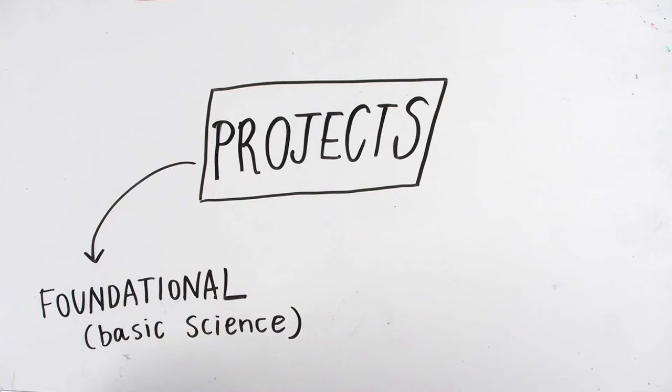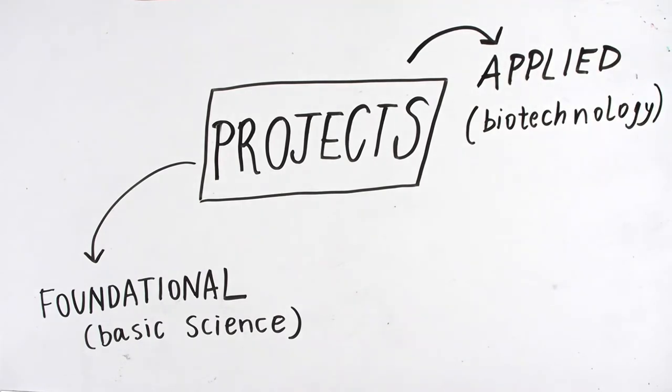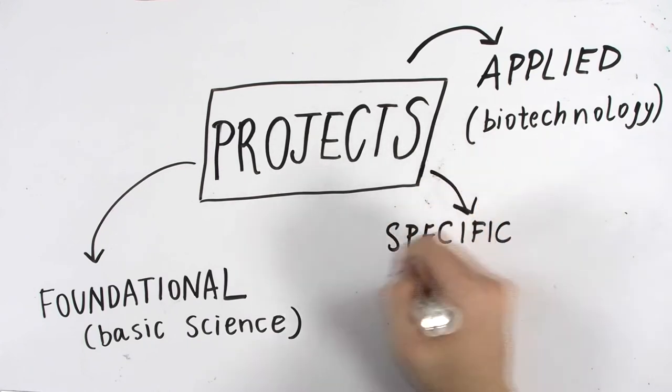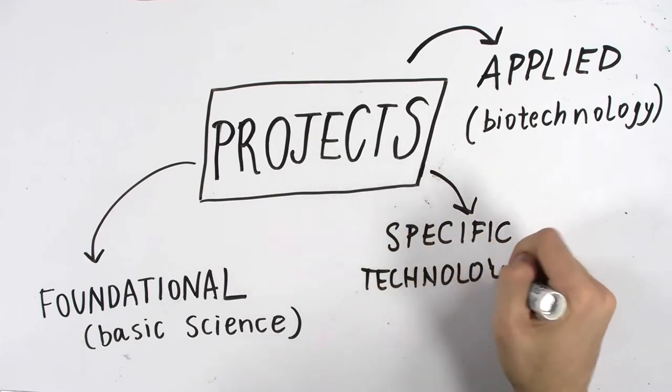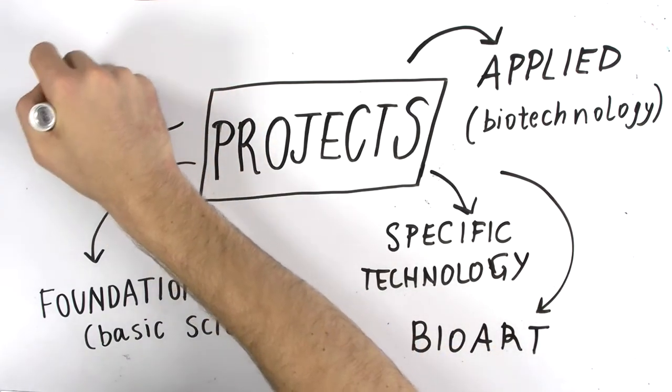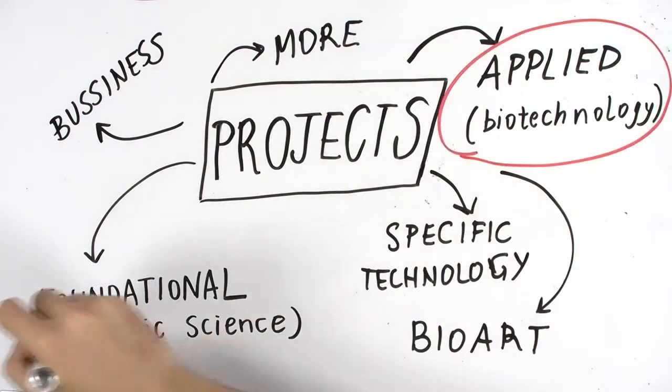Another type of project can be an applied one, where you use an engineered organism to perform a specific task like cleaning water from a pollutant, biosensoring, or producing a protein. Other projects can include the use of a specific technology, bio-art, or business-leading ideas. However, most high school projects fit in the first two categories.